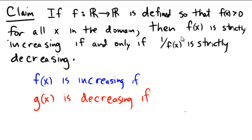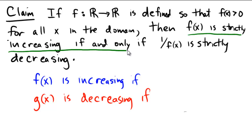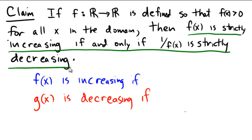So technically, this is what we're proving. We're going to take that function satisfying those conditions at the beginning, and then we're going to show this if-and-only-if statement: f of x is strictly increasing if and only if 1 over f of x is strictly decreasing.